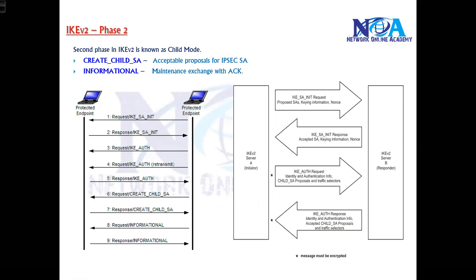Let's move on to understand the next phase — Phase 2. Comparing this with IKEv1, we can call it Phase 2, and technically we call this the child mode, or creating a Child SA. This is more like the IKEv1 Phase 2 process.